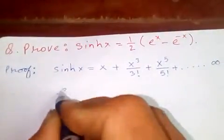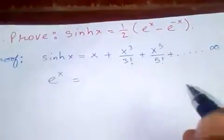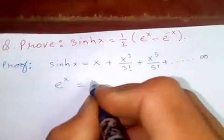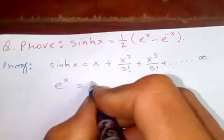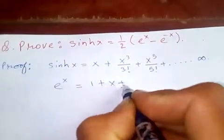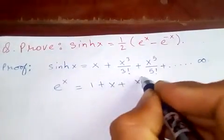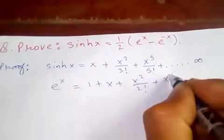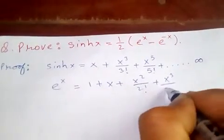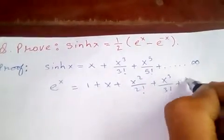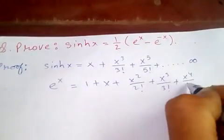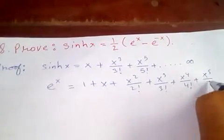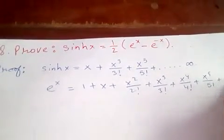And e to the x — the exponential series — is 1 plus x plus x squared over 2 factorial plus x cubed over 3 factorial plus x to the 4 over 4 factorial plus x to the 5 over 5 factorial plus and so on.